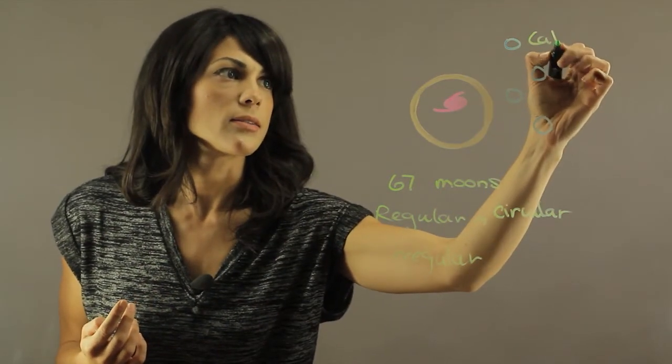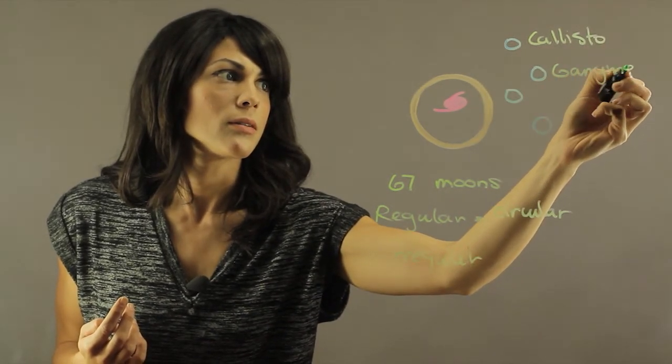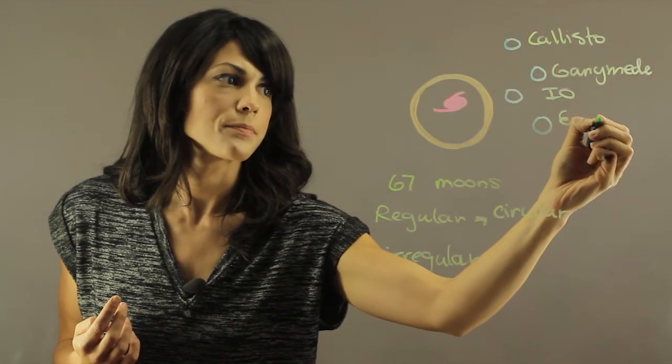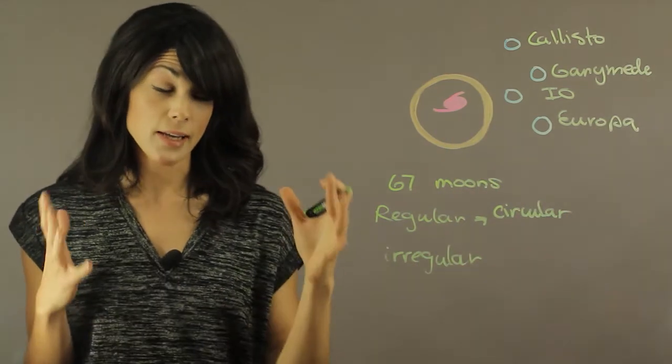And this is Callisto, Ganymede, Io, and Europa. And these are part of the regular satellites.